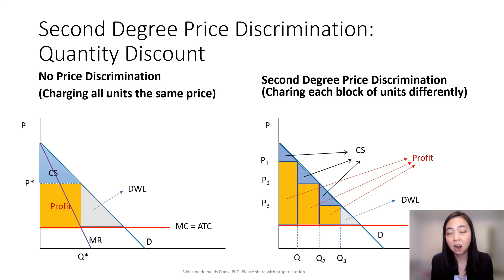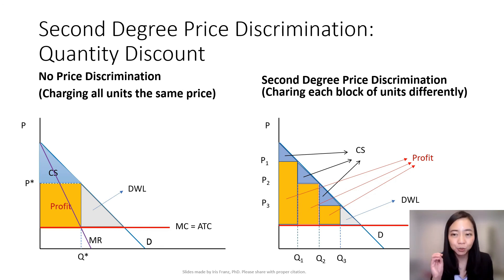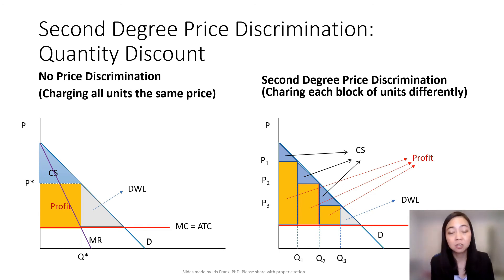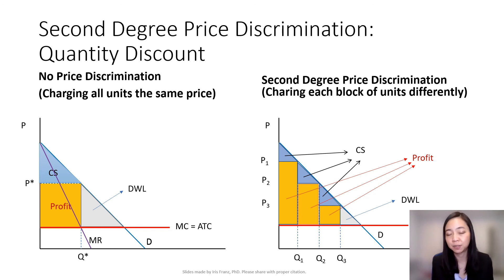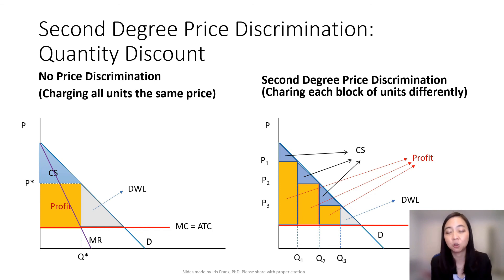Notice that our consumer surplus — the blue triangle — is already smaller than the big blue triangle with no price discrimination. Why does our consumer surplus go down? Because the firm takes away your consumer surplus and it goes to the firm's profit.